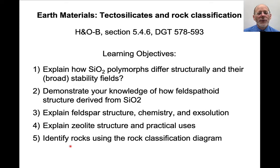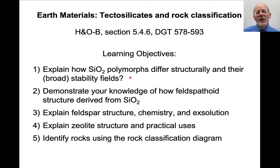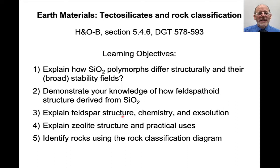At the end of this I hope that students will be able to say something about how the silica polymorphs differ structurally and their broad stability fields — high pressure polymorph, low pressure, high temperature, low temperature — to have a basic understanding of how feldspathoid structures can be derived from silica structures, understand feldspar structure and chemistry, know a little bit about zeolite structure, and then classify rocks using a rock classification diagram.